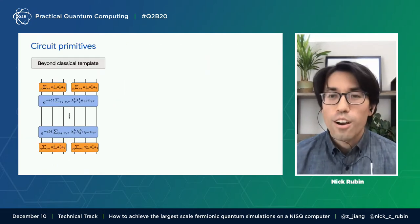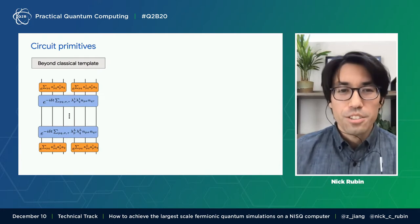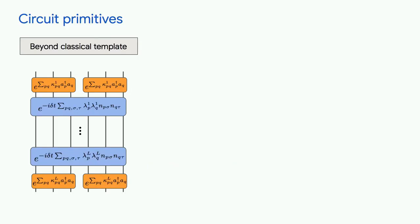So what do I mean by beyond classical circuit primitives? What I have shown here is a circuit that is one of the most efficient ways for performing Trotterized time evolutions for chemistry and materials Hamiltonians. And our goal is to understand how to error mitigate and optimally compile these circuit components to our quantum device to derive useful computational work.